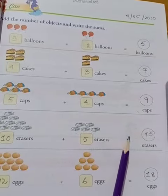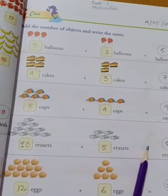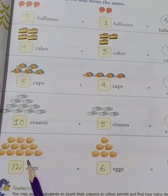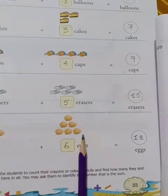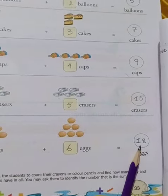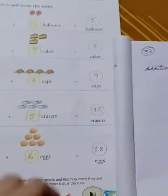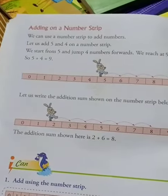equals fifteen erasers. Twelve eggs plus six eggs equals eighteen eggs. Next, we will do adding on a number strip.